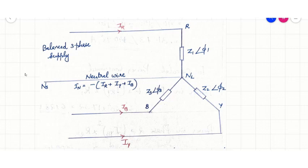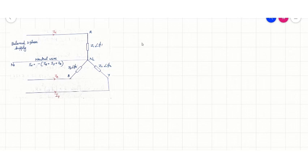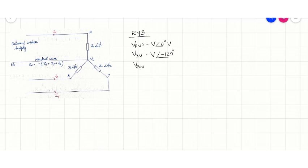Let us consider R, Y, B phase sequence. The phase sequence is R, Y, B. Then, the phase voltages Vrn, Vyn, and Vbn can be taken as V∠0°, V∠−120° volts, and V∠−240° volts respectively.